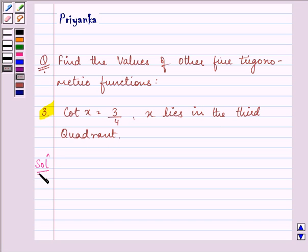So let us start with our solution. Here the value of cot x is given to us as 3 by 4. So therefore tan x value will be 1 divided by cot x, that is 4 by 3.